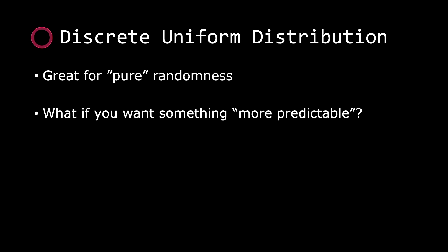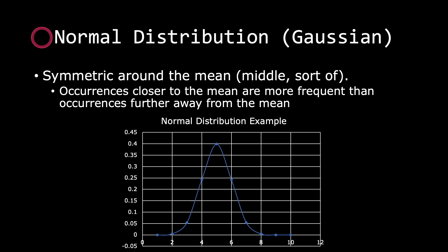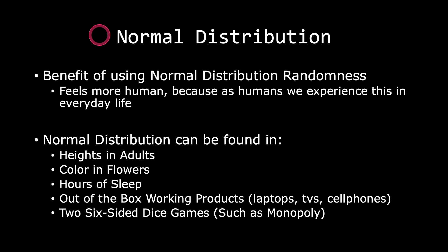However, what if we want something more predictable? In that case, we can use a normal distribution random generator. Normal distribution is a symmetric probability around the mean — you can think of it as the middle. Basically, all occurrences closer to the mean are more frequent than occurrences further away from the mean.